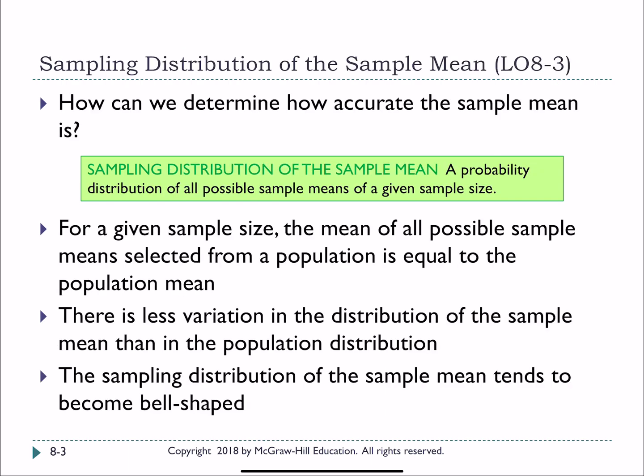So the next part of the chapter looking at what's called a sampling distribution of the sample mean. This is going to help us test how accurate our sample mean really is. A sampling distribution of the sample mean is simply a probability distribution, just like we've looked at in prior chapters. This time though, it's a distribution of all possible sample means given a specific sample size. So a sample size of five, like the last example, or a sample size of two.